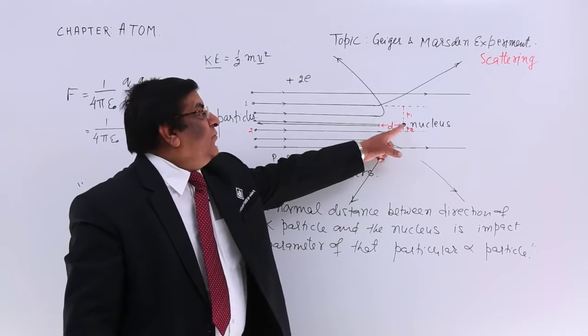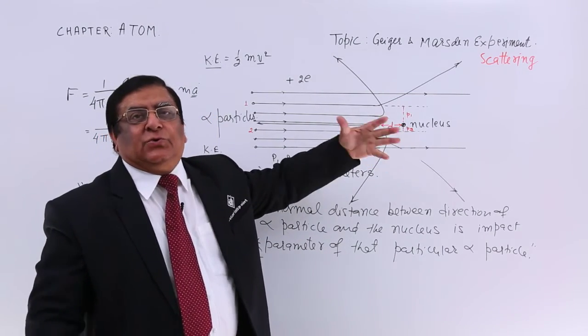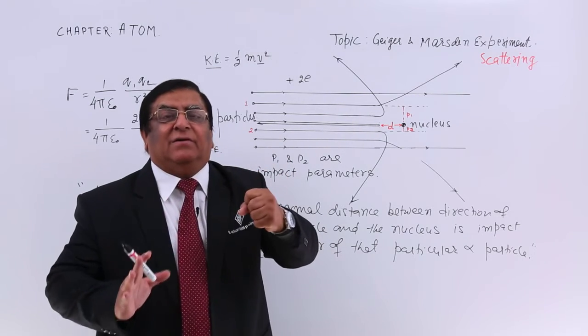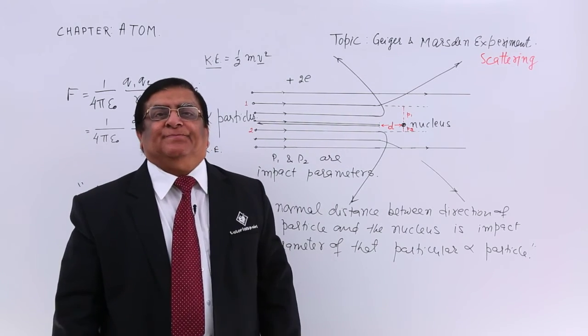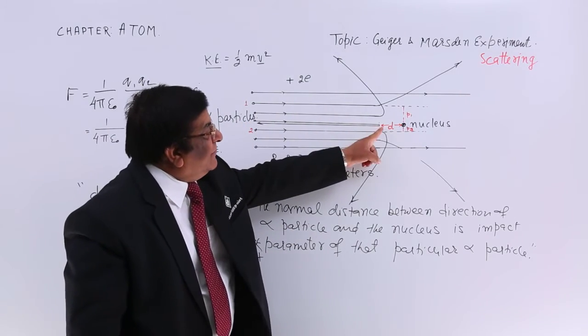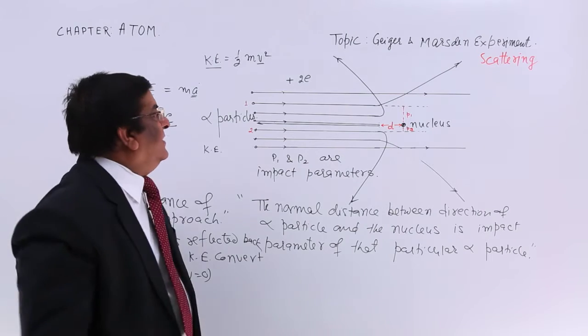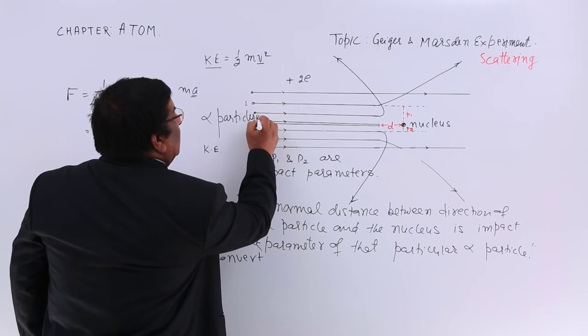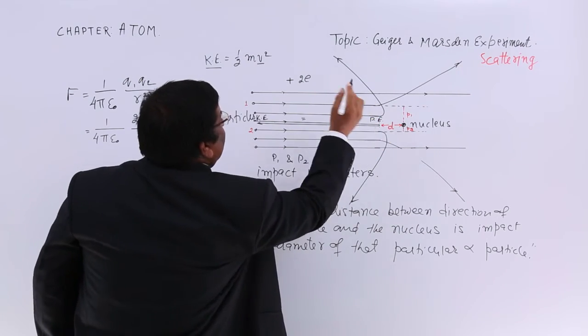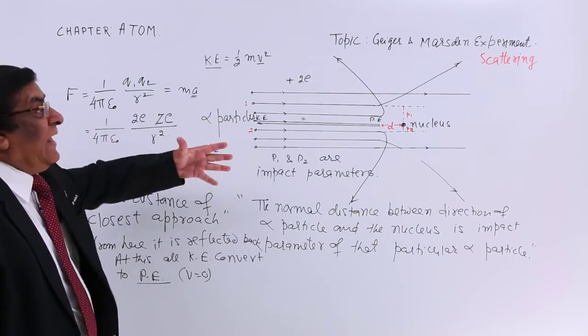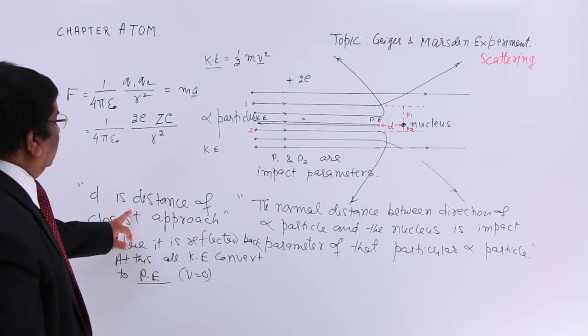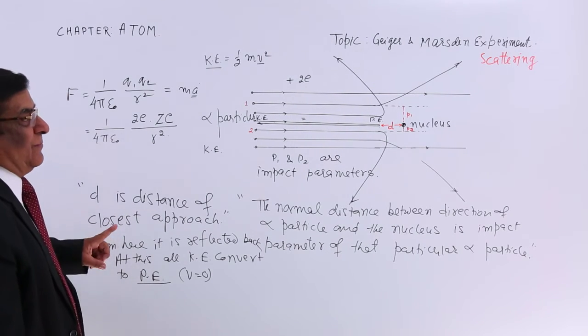But there is lot of force here. So under force, this particle is having a potential energy. So, all kinetic energy at this point has been converted to potential energy at this point. KE is equal to PE at this point. This will help us in further calculations. So, this is the distance of closest approach.